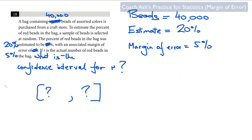Now try this very similar problem. You've got 40,000 beads instead of 10,000. The percent of red beads is estimated at 20% and the margin of error is 5%. Use the same calculations, find the confidence interval, and post it in the comments.